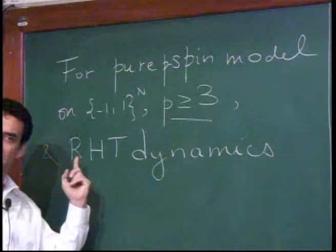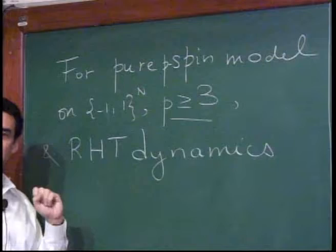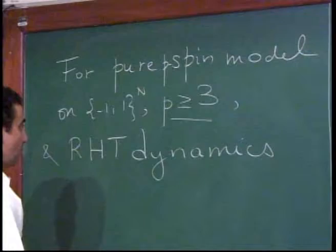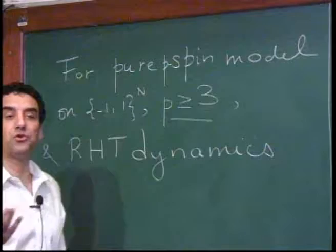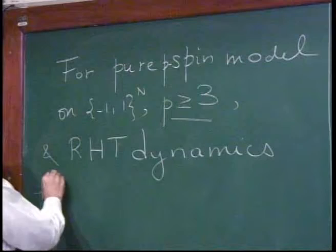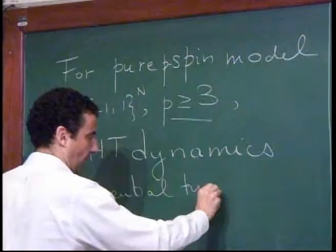It would be a good open problem to do this for real dynamics, even on the simplest model. So we take the pure P-spin model on the cube, P larger than 3, and the random hopping time dynamics, and we prove that it looks like a Bouchaud trap model in a certain sense — we look at the clock process.